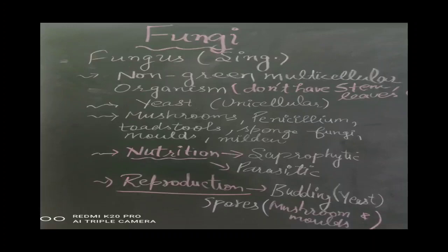The nutrition mode of fungi is saprophytic and parasitic. Saprophytic means they depend on dead and decaying plant matter or animal matter for their nutrition. Parasitic means they live on a host organism. They can reproduce by the process of budding and spore formation.